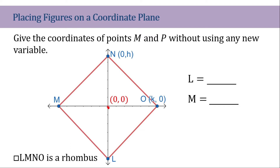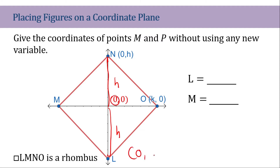Since they bisect each other, the measurement of L is equivalent to the measurement of the opposite segment. The measurement of this diagonal says it measures H, so the other half should measure H as well. To get the coordinates of L, it has the same X coordinate as the origin, so it will be (0, blank). The Y coordinate should be H, but since it is below the origin, this should be negative H. So L has a coordinate of (0, -H).